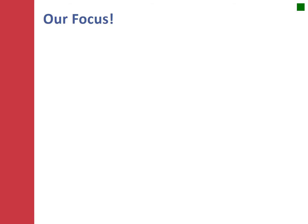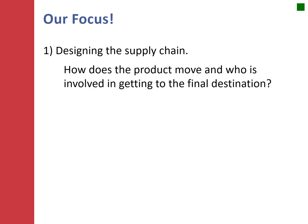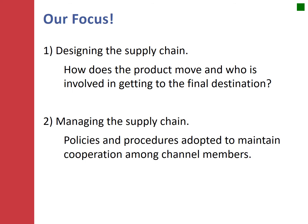Our objective when it comes to supply chain or channel management is, number one, to think about how the supply chain is designed and how that design should work within the industry. How does it move from raw production or raw materials to the actual customer? And then we also want to focus on managing the supply chain and creating policies to help ensure that supply chain members do what they're supposed to do to the best of their ability.